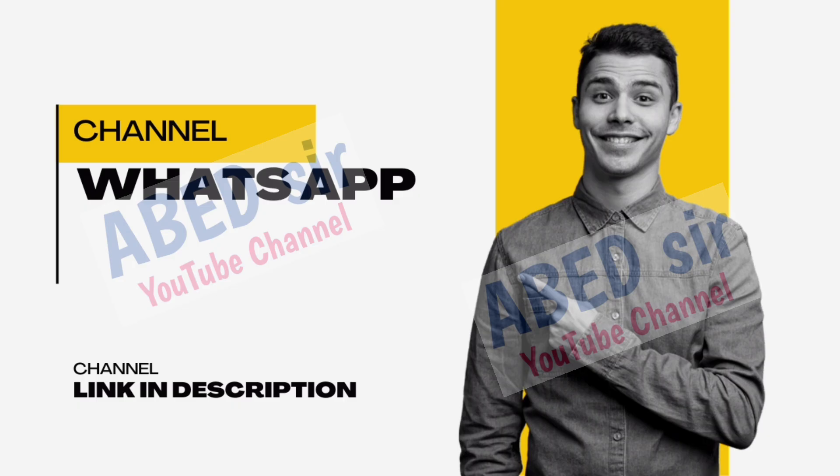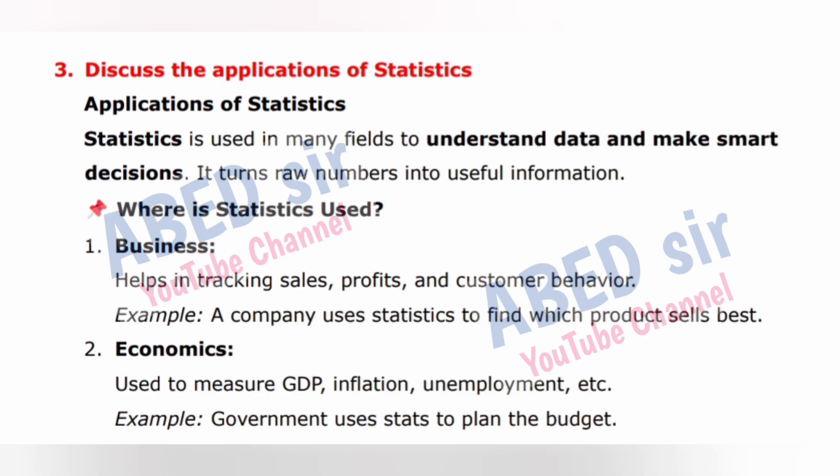Next important short question: Discuss the applications of statistics. Statistics is used in many fields to understand data and make smart decisions. It turns raw numbers into useful information. Where is statistics used? 1. Business: helps in tracking sales, profits, and customer behavior. Example: A company uses statistics to find which product sells best. 2. Economics: used to measure GDP, inflation, unemployment, etc. Example: The government uses statistics to plan the budget.